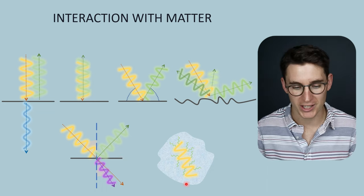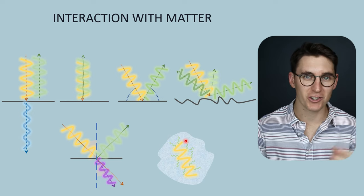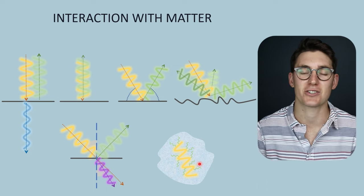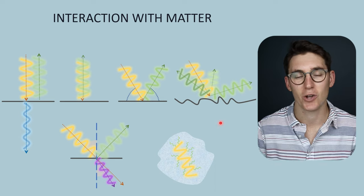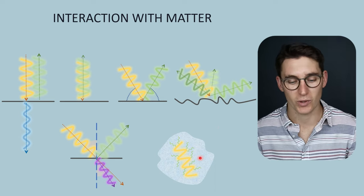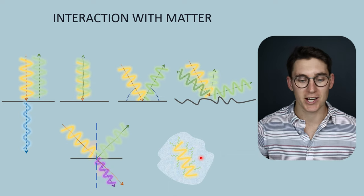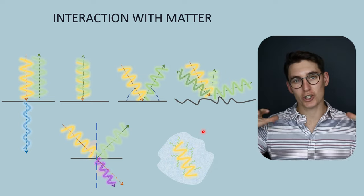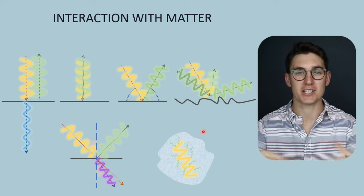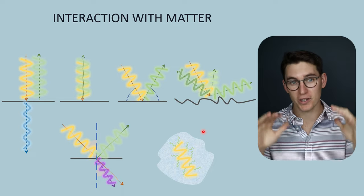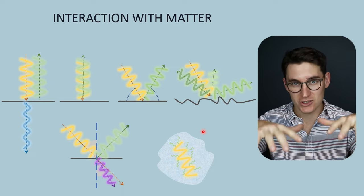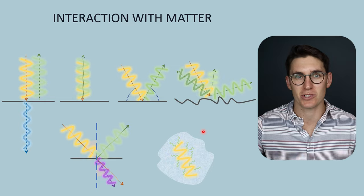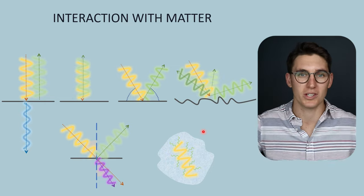The last type of tissue interaction is known as scattering. When an ultrasound wave interacts with units within a tissue that are smaller than the wavelength of the incident ultrasound wave, we get scattering — a loss of energy of the incident wave, with small sound waves produced in any direction. I like to think of scattering as a large wave in the sea coming towards a beach made of pebbles. Those pebbles are much smaller than the wavelength of the wave, and as that wave crashes in, it disperses in all directions. The energy is dissipated into lots of smaller waves.